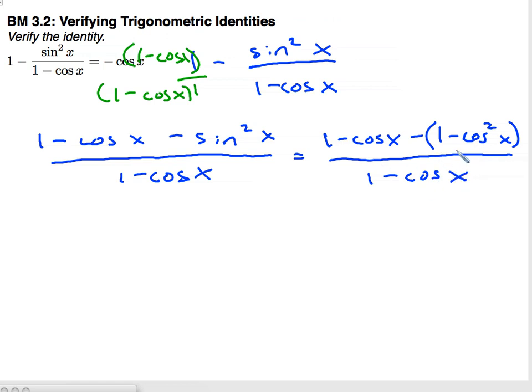If I distribute in this negative sign here, I'm going to have 1 minus 1 plus cosine squared x all over 1 minus cosine x.